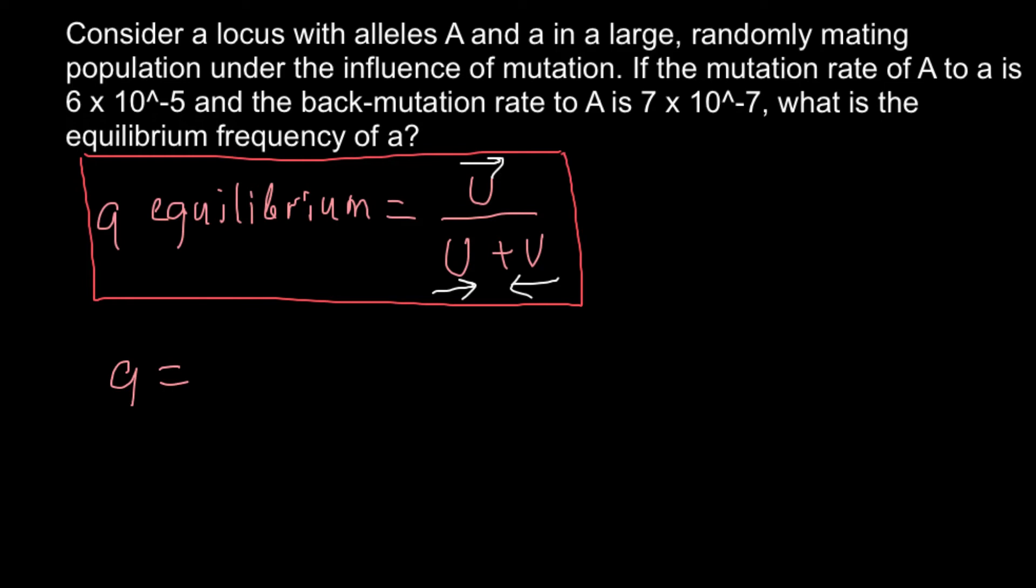the forward rate of mutation, which is 6 × 10^-5, divided by the same number